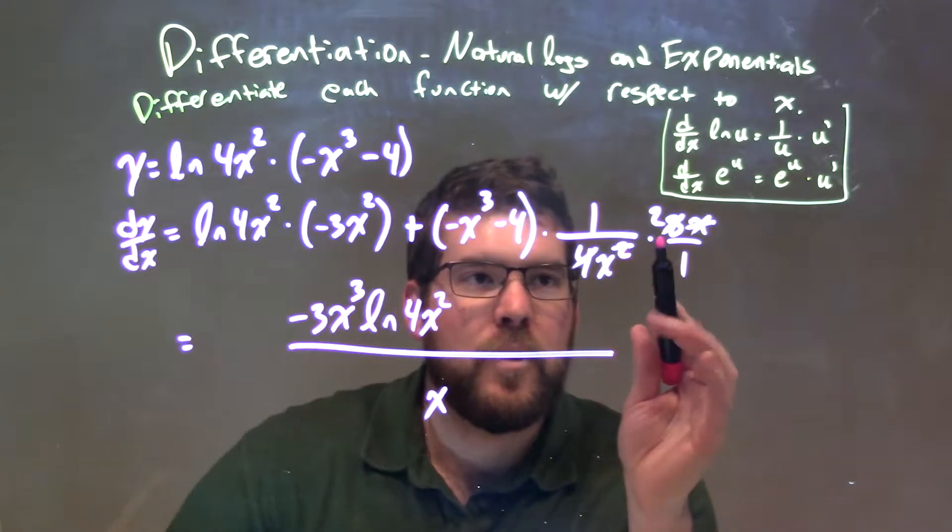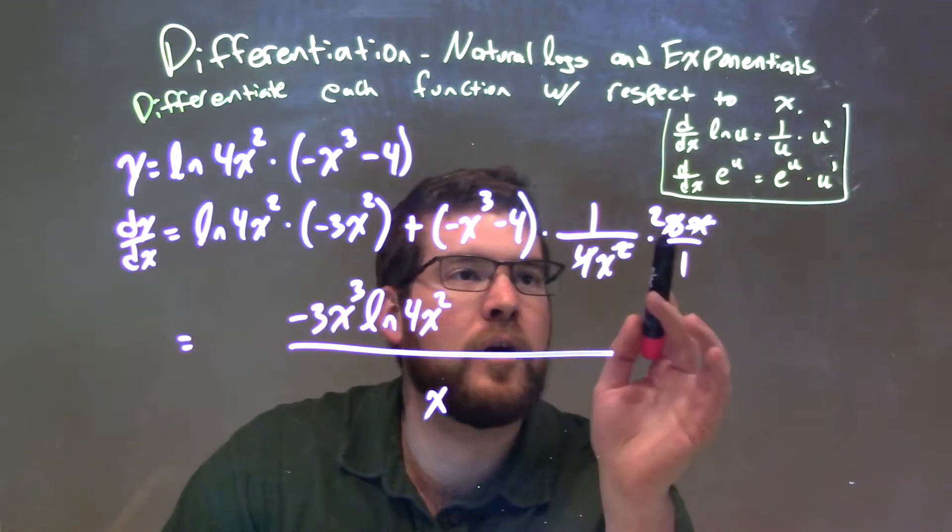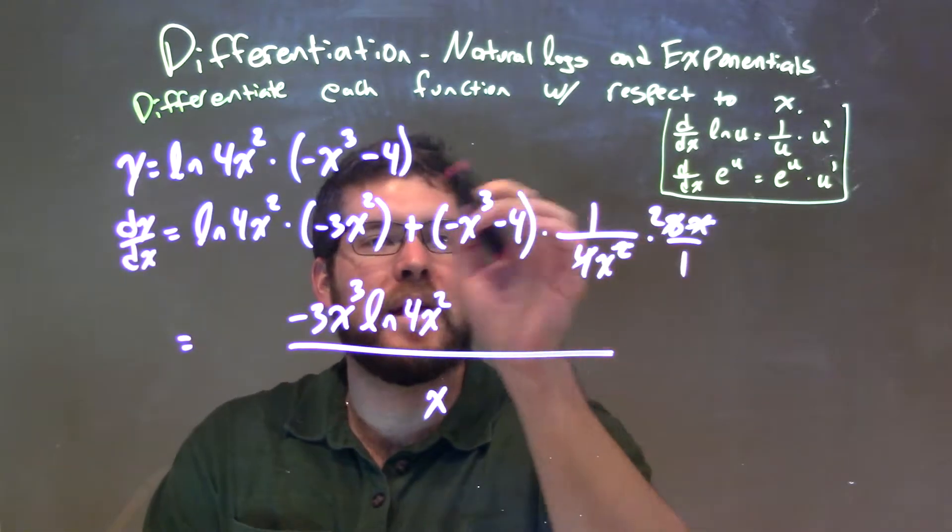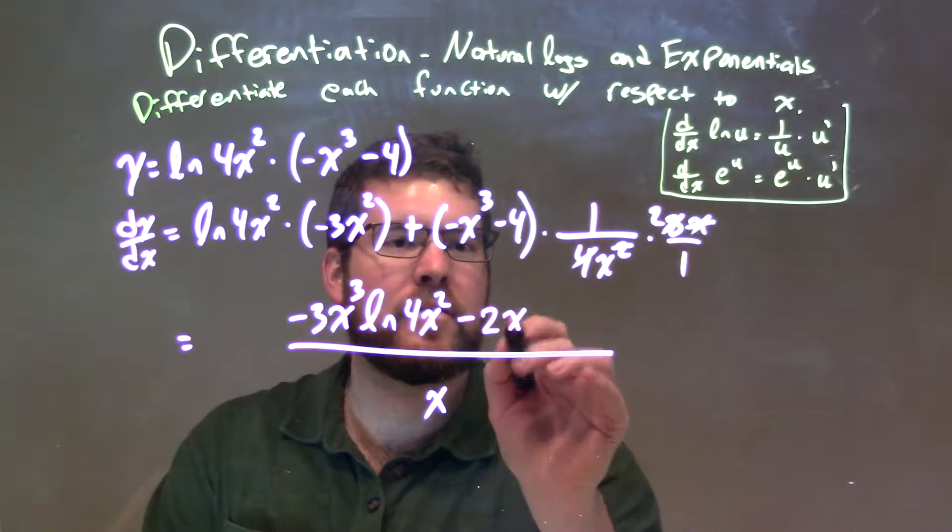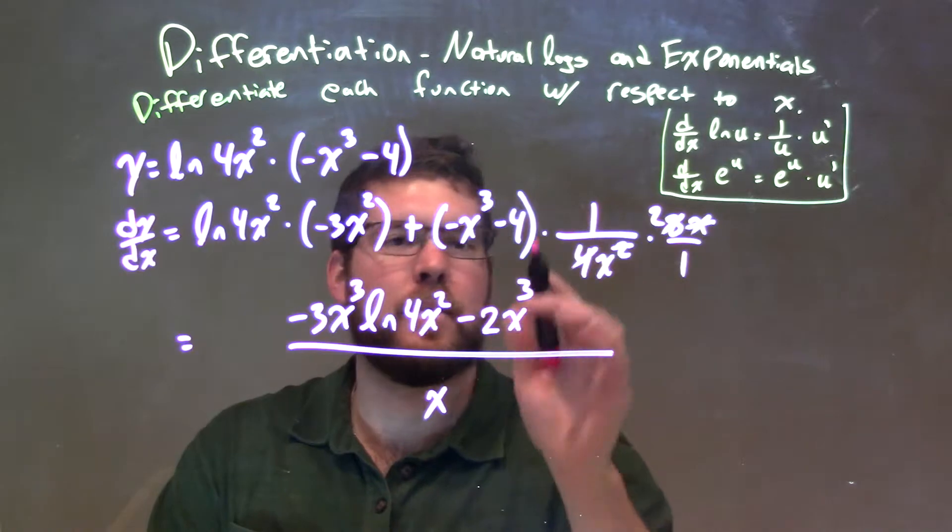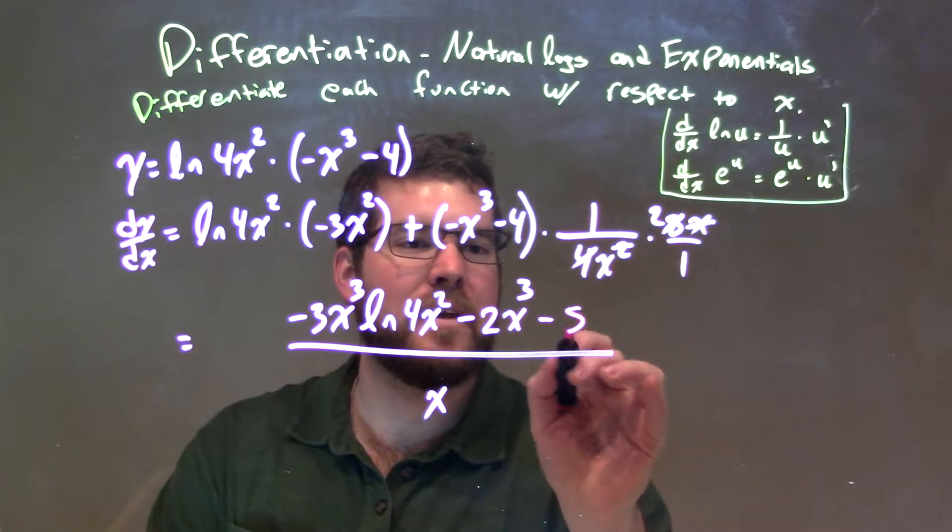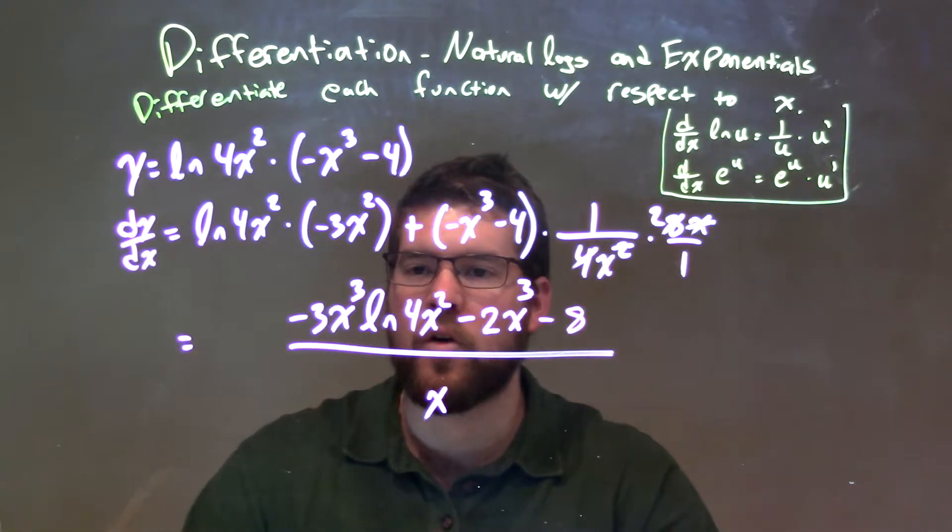Now, here's the tricky part. We multiply that 2, right? We're adding this, but we're also multiplying that 2 to both parts. So, we distribute that 2 in. So, we have minus down front, minus 2x to the third, and then 2 times the minus 4 is minus 8. And there we have it, our final answer.